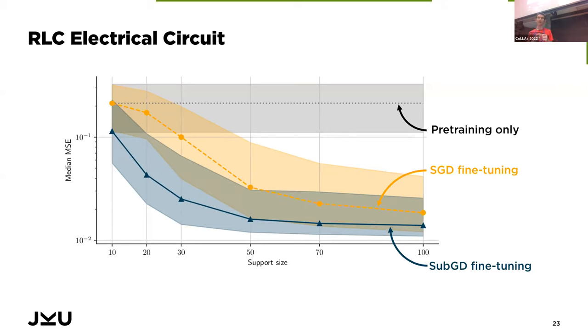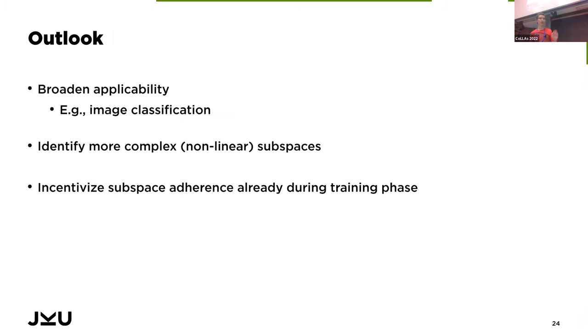The yellow line, which is simple SGD fine-tuning, as it makes sense, the MSE decreases as we add more training samples. But what we can also see in this plot here is that the blue line, which is Sub-GD fine-tuning, achieves a lower MSE at fewer training samples. So we're more sample efficient, and this is something that we could see more generally across different dynamical systems problems—that Sub-GD really helps to increase the sample efficiency during fine-tuning.